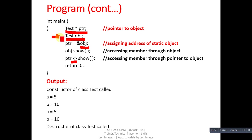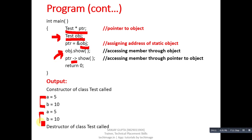When the object is created with 'test obj', the message 'constructor of class test called' is printed. Then 'a is 5 and b is 10' is printed via obj.show(). The same values are printed again via ptr->show(), so a and b appear twice. When the program terminates, the message 'destructor of class test called' is printed automatically. This program is based on static object creation.